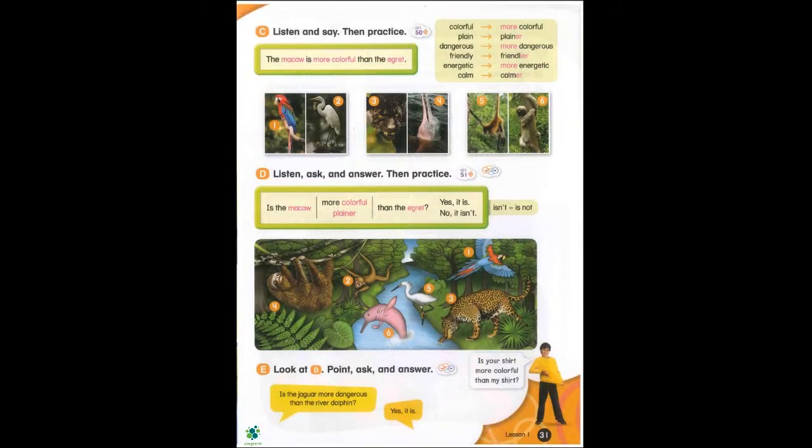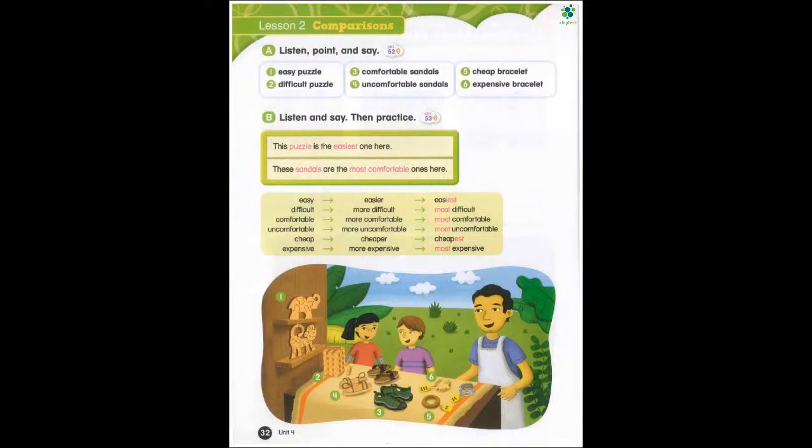One: Is the macaw more colorful than the egret? Yes, it is. Two: Is the spider monkey calmer than the sloth? No, it isn't. Three: Is the jaguar more dangerous than the river dolphin? Yes, it is. Four: Is the sloth more energetic than the spider monkey? No, it isn't. Five: Is the egret plainer than the macaw? Yes, it is. Six: Is the river dolphin friendlier than the jaguar? Yes, it is.